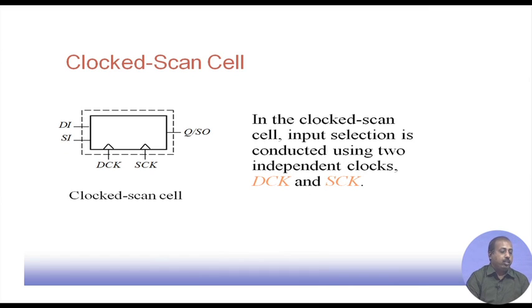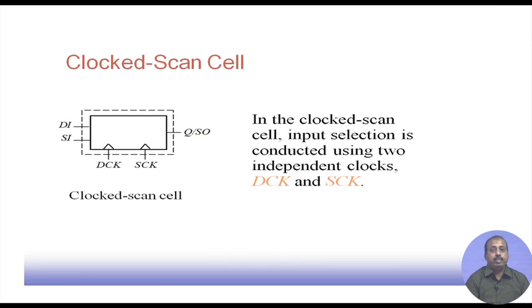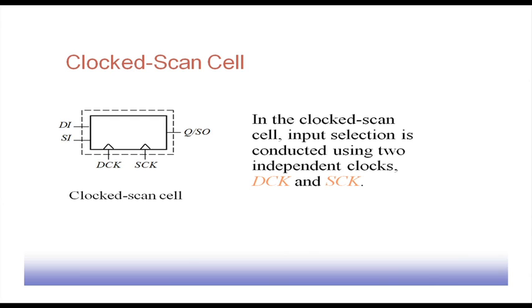Another possibility is to have two different clocks: a data clock and a scan clock. The cell is designed to operate with these two different clocks. When the data clock is given, the circuit operates in normal mode; when the scan clock is given, the circuit operates in scan mode. In a clocked scan cell, input selection is conducted using two independent clocks DCK and SCK. Applying these clocks is crucial — they must not be applied simultaneously; they are applied in a non-overlapping fashion. This is ensured by the test engineer, who will definitely make sure that the data clock and scan clock are non-overlapping.